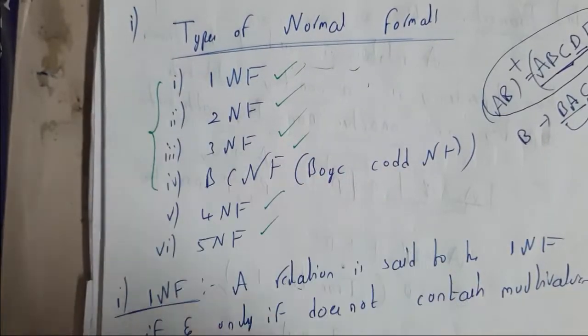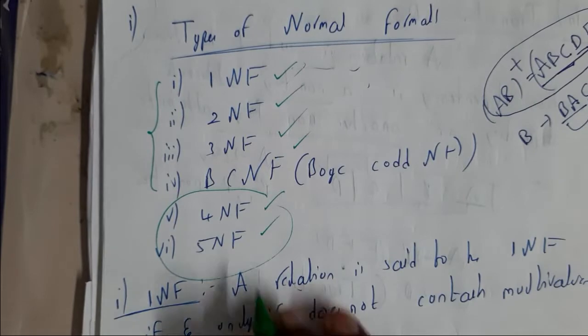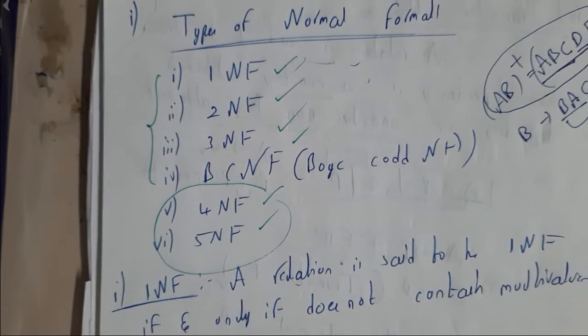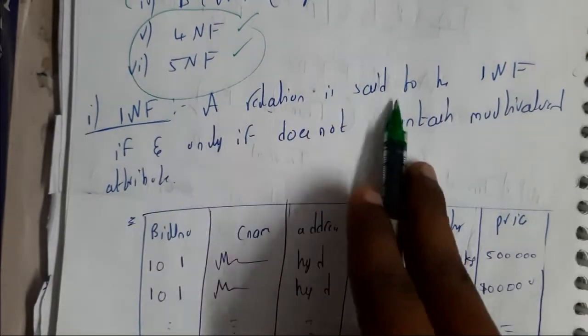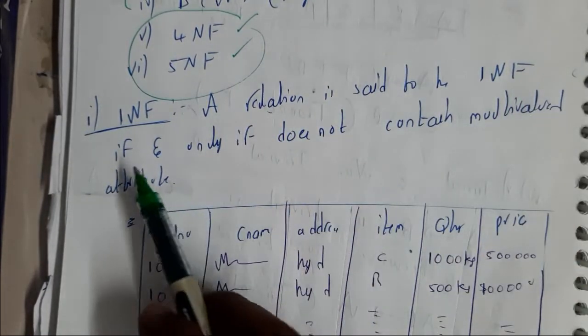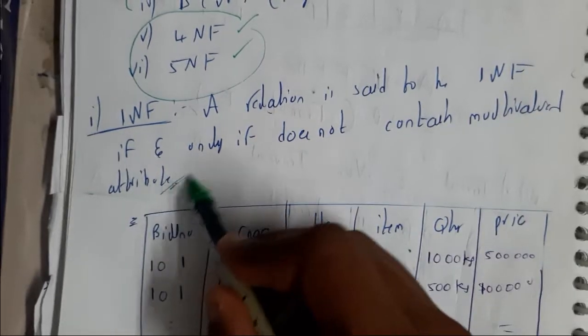In this lecture we will be discussing only the top four normal forms. Fourth and fifth normal forms are not so important. So the first normal form says that a relation is said to be in first normal form if and only if it does not contain any multi-valued attribute.